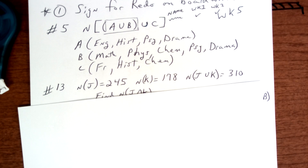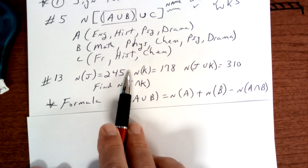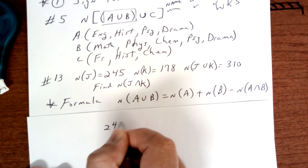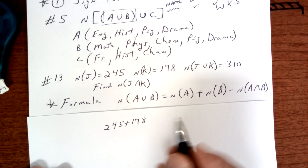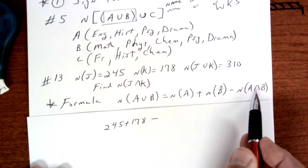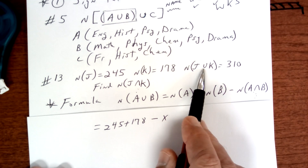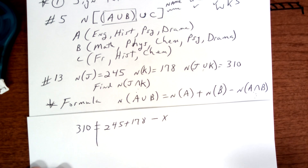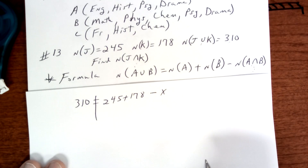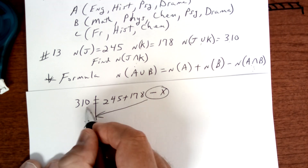Let's go on to this one. You have a formula: you add up A and B — so 245 plus 178 — then minus the intersection. They don't tell us the intersection; that's what we're looking for, so we call it X. The total is 310. You work backwards from the formula: move the negative X to one side as a positive, and move 310 to the other side as a negative.